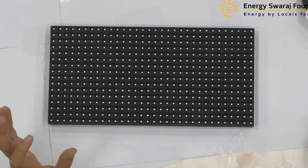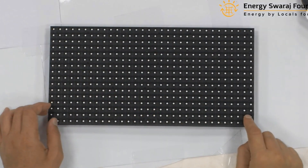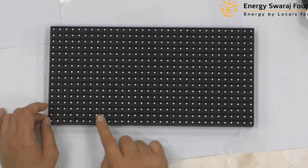This LED is called P10 — the '10' means there is a 10mm pixel pitch, meaning the distance from one LED to the next is 10 millimeters. What you see on your screen is a red color display, so it gives only red as light output. The pixel-to-pixel distance is 10mm.